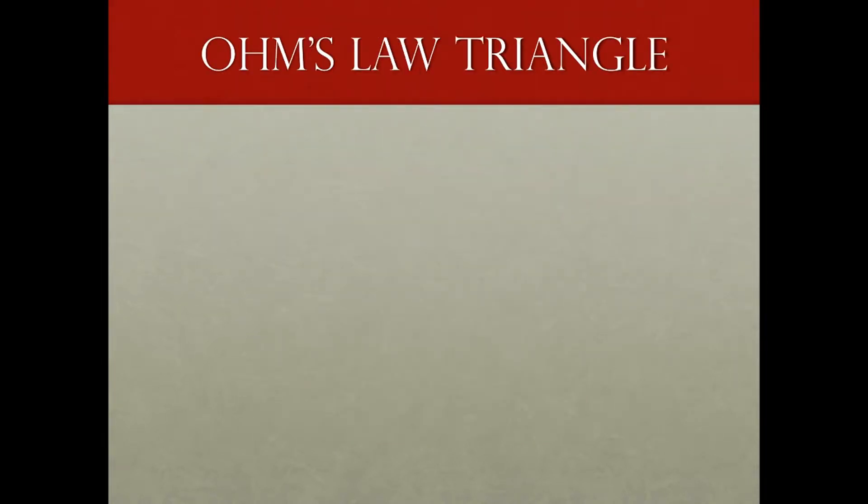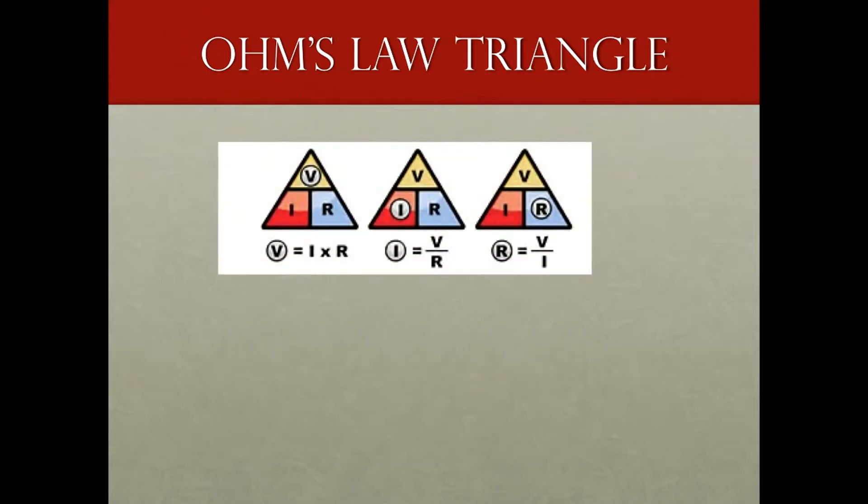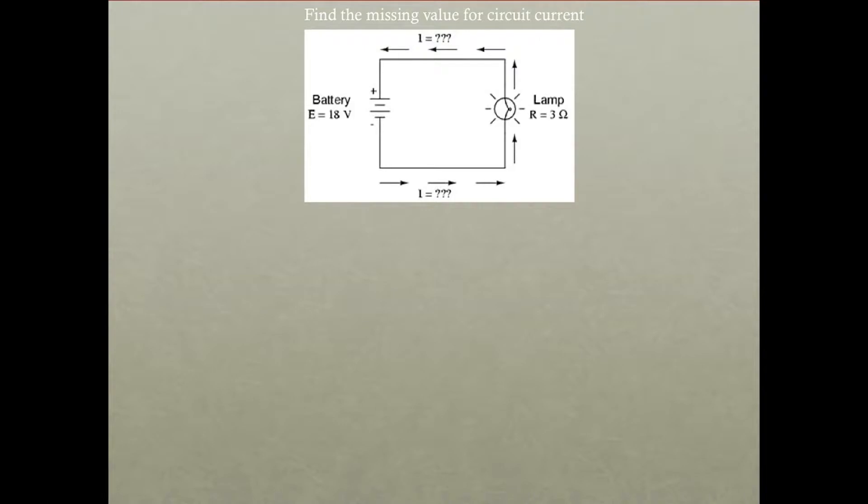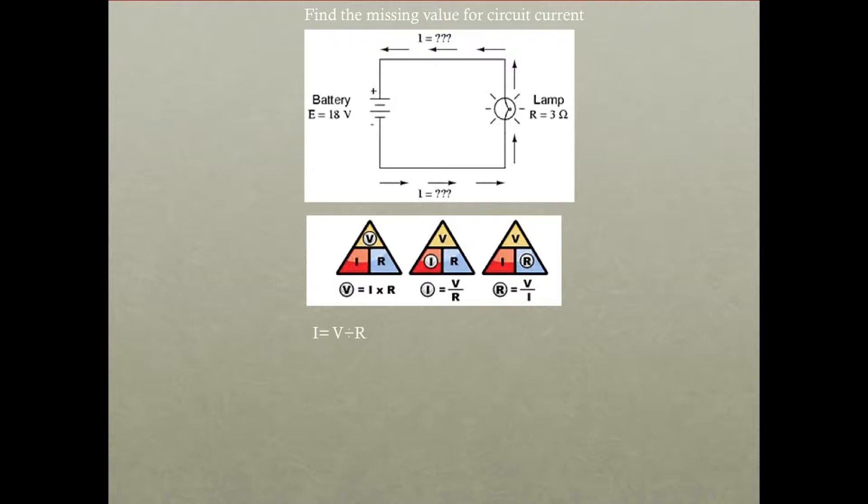Now Ohm's Law triangle, this is a very handy way and a very handy tool of finding a missing variable. By manipulating Ohm's Law, any one of the three variables can be determined. So let's take an example of that. Let's find the missing value for the circuit current here in this very basic circuit. We're going to take our Ohm's Law triangle and we see that center triangle shows that the missing variable I can be derived from taking V over R. So if we take, looking for I, we've got 18 volts and we divide it by 3 ohms, that gives us our circuit current 6 amps.